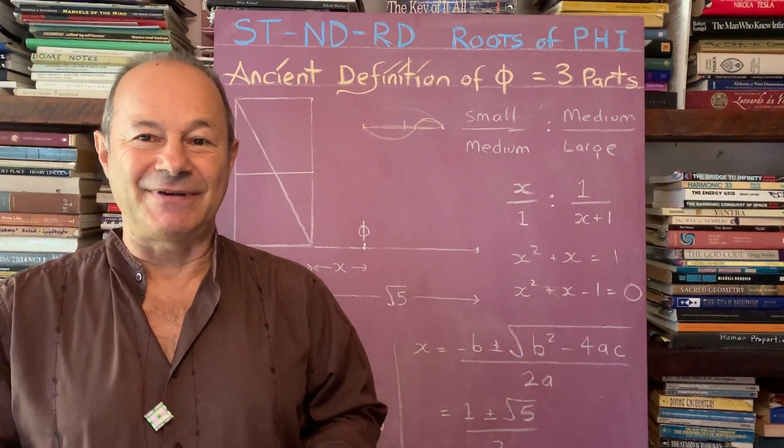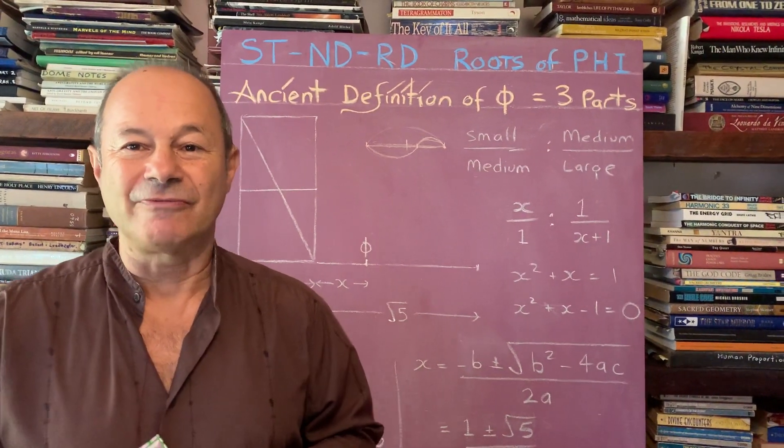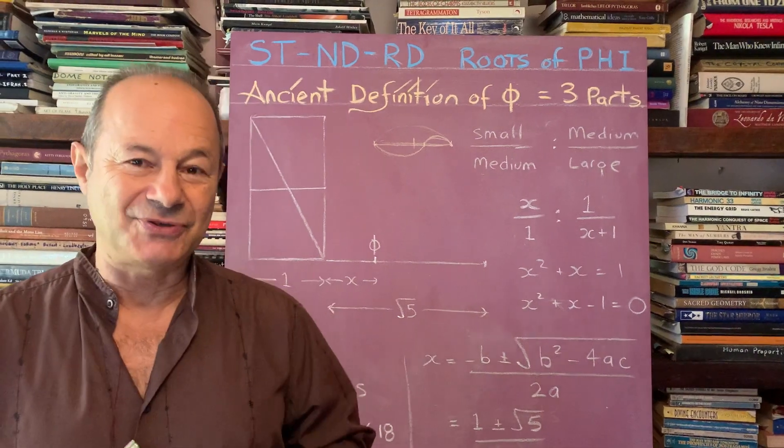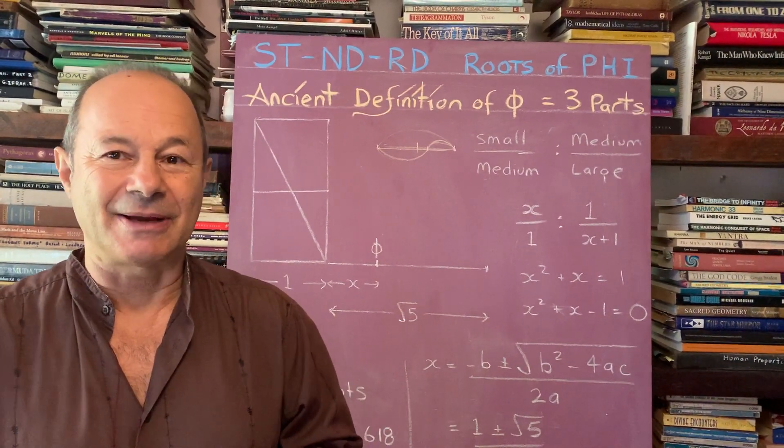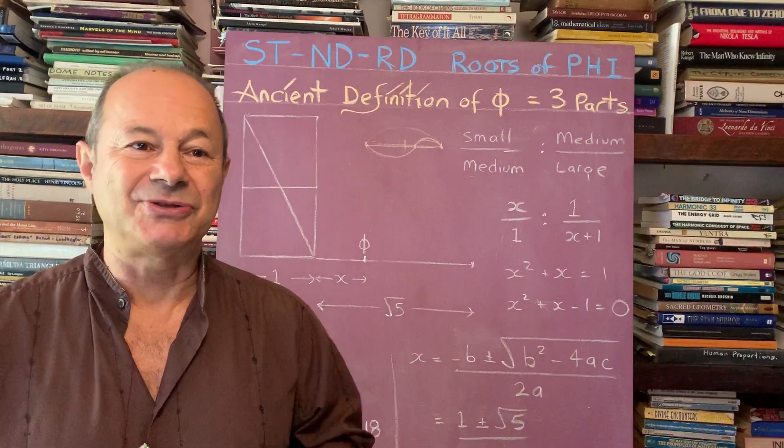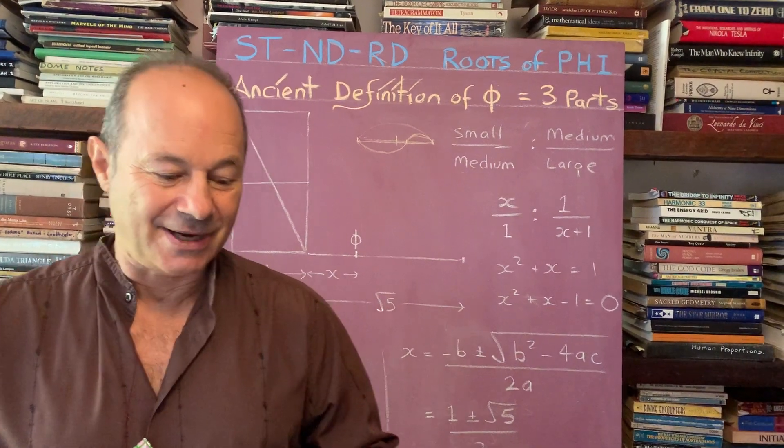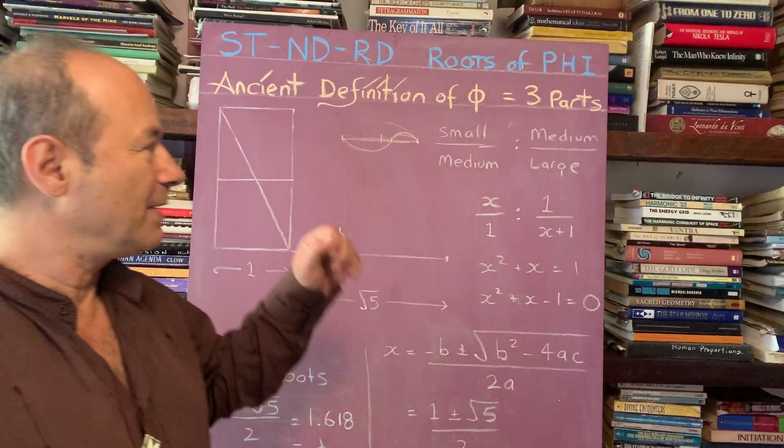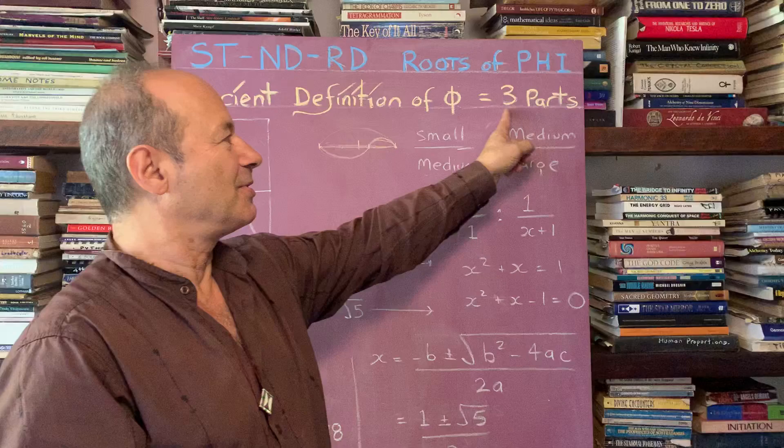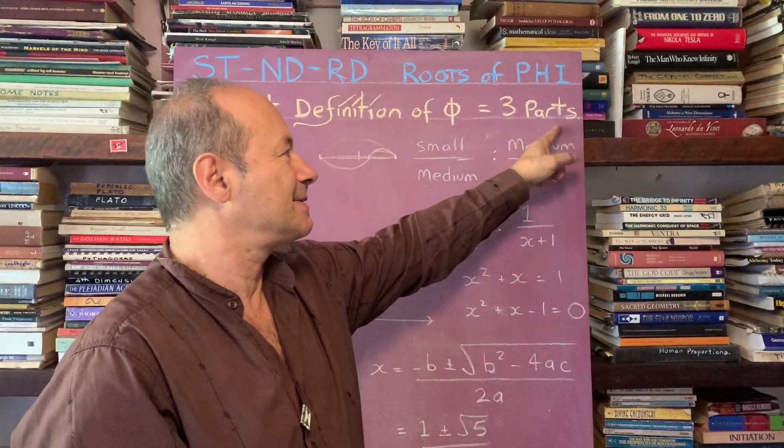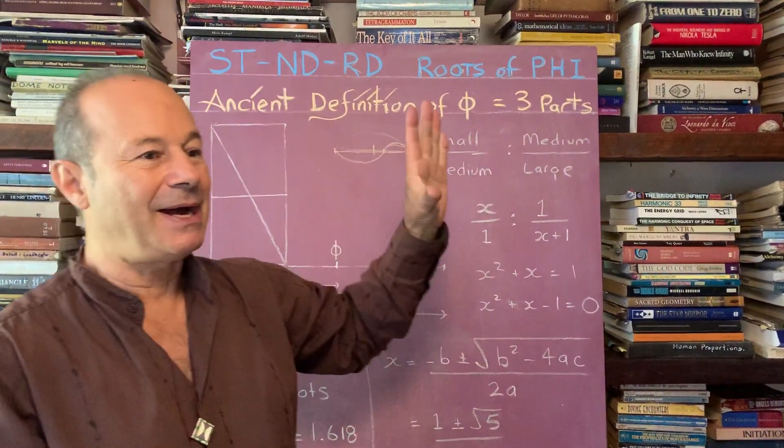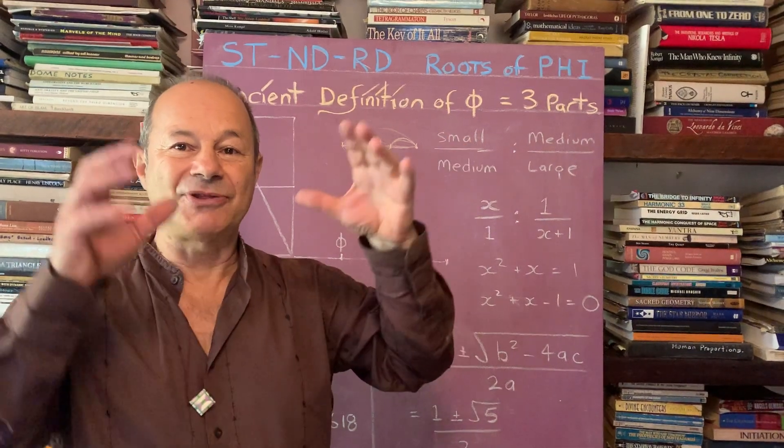Here is the ancient definition of what the golden ratio is, given to us from mathematicians like Pythagoras and Plato two and a half thousand years ago. What it really is is something based on a trinity of three parts: there's a large part, a small part, and the whole part.